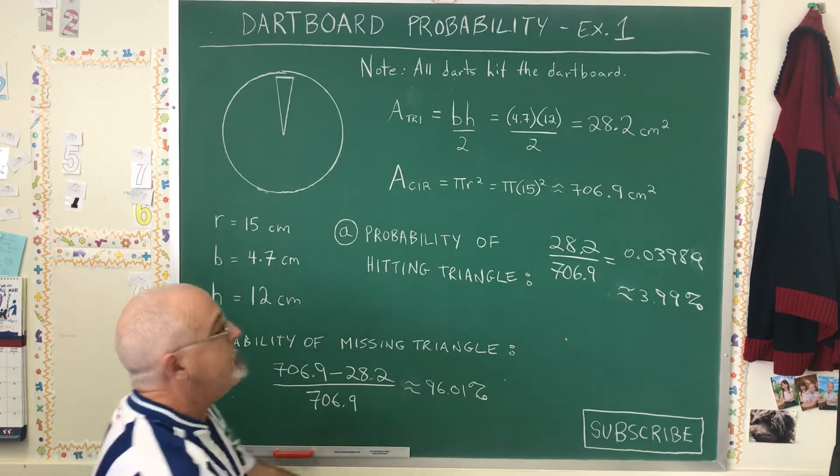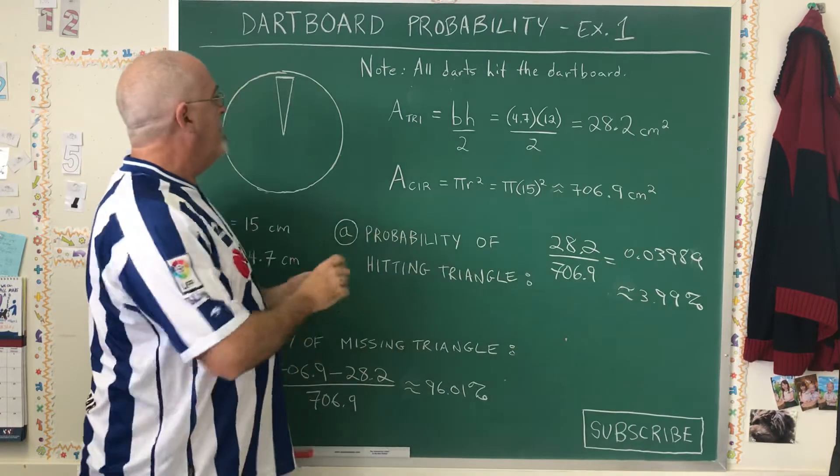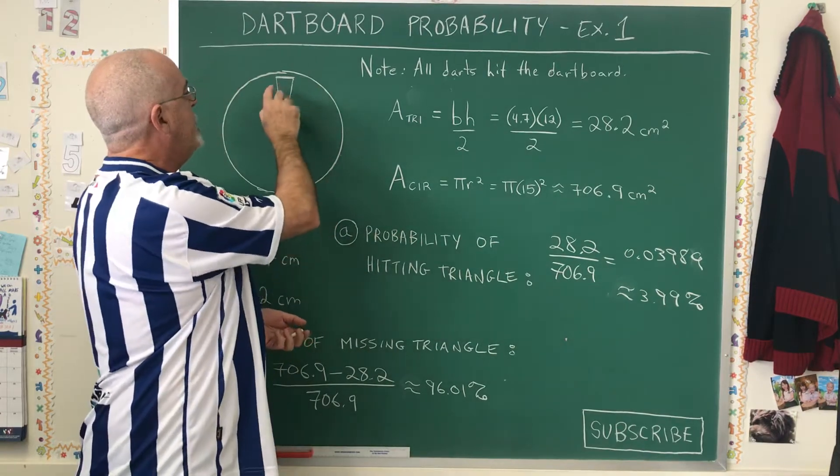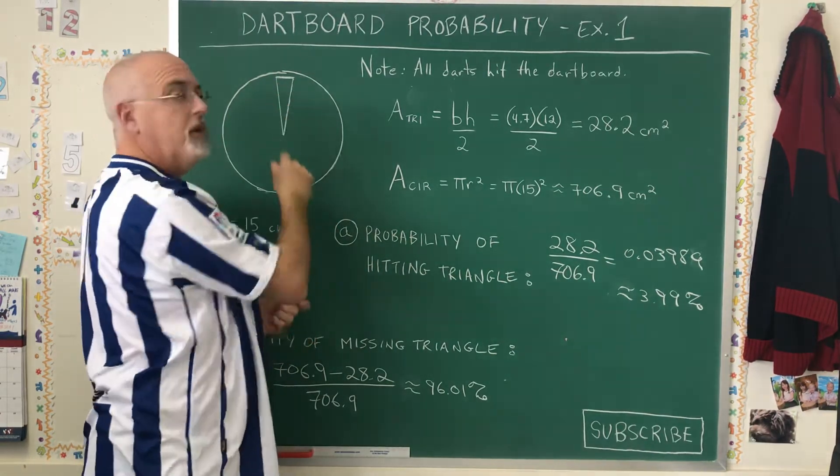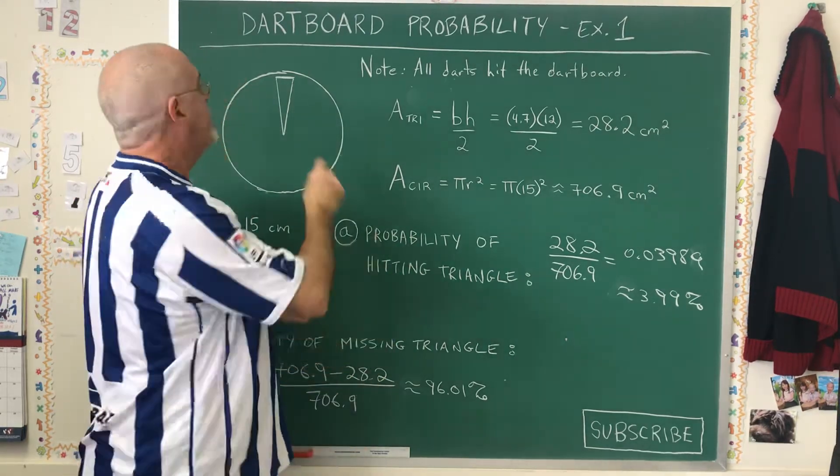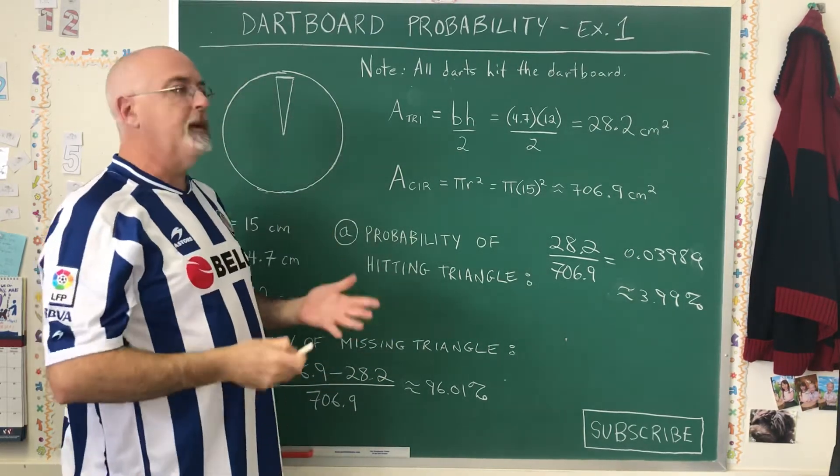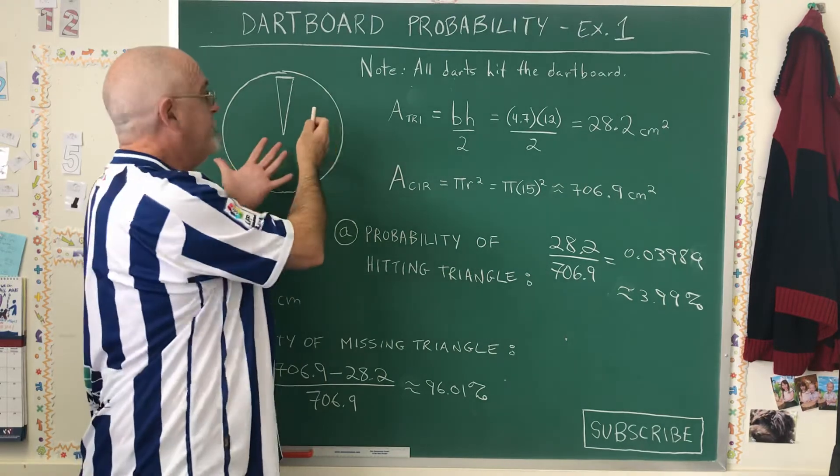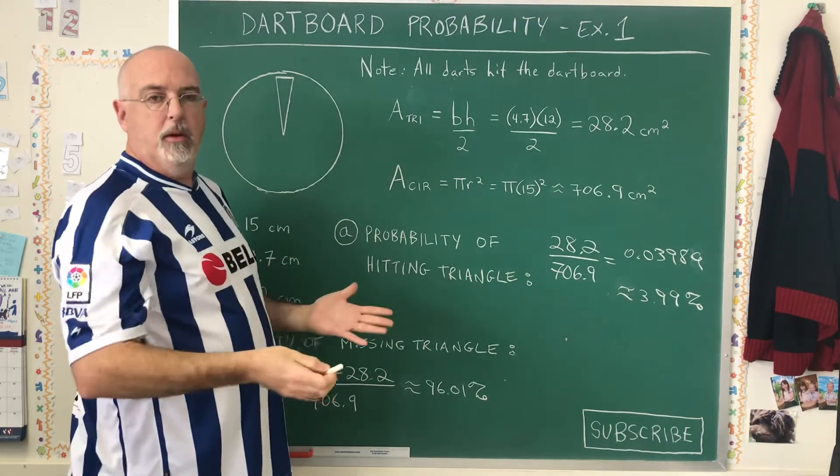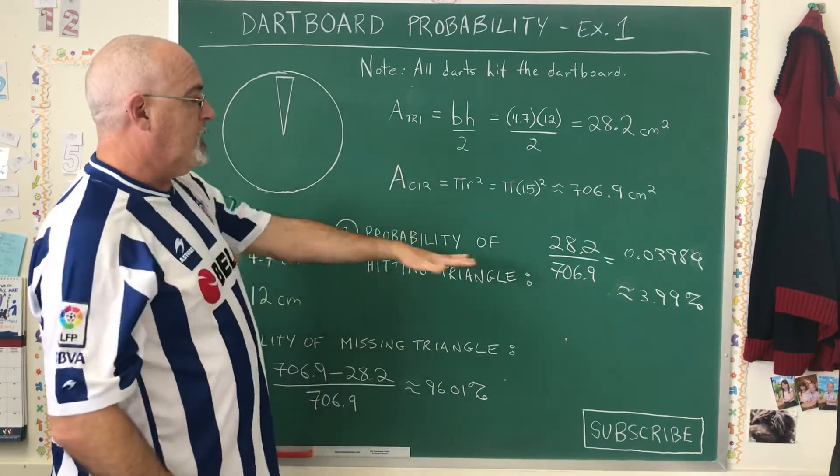of course, there's a shortcut here because the chances of hitting the area that don't include the triangle are complementary to the chances of hitting the area of the triangle, because the two areas add up to the total—to 100%.